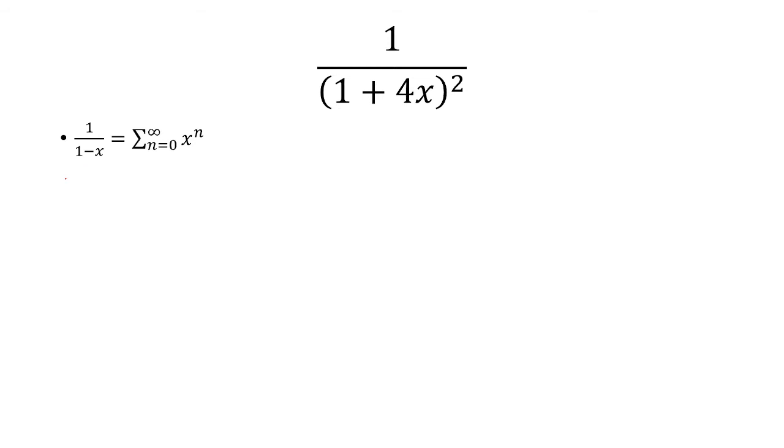From here, we're going to replace x with negative 4x. So 1 over 1 minus negative 4x becomes 1 over 1 plus 4x. And in place of x, we're going to put a parenthesis and replace it with negative 4x.